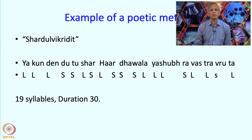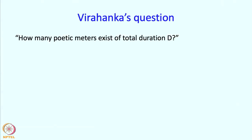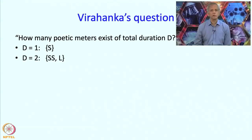Prosodists were concerned with such poetic meters and they asked questions such as how many different poetic meters can there be, and they sometimes even wanted to enumerate the poetic meters. So Virahanka's question was: how many poetic meters exist of total duration d? If d equals 1, you want a poetic meter of duration 1 — well, you do not have a choice. The only poetic meter possible of duration 1 is a trivial thing: a poetic meter which just has one short syllable.